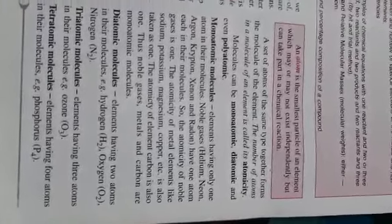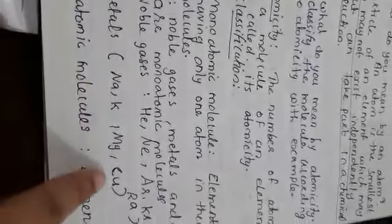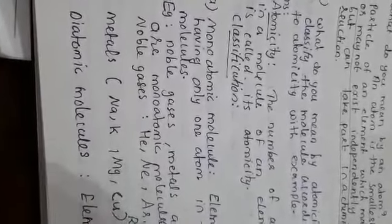Monoatomic molecules are elements having only one atom in their molecule. Examples are noble gases like helium, neon, argon, krypton, etc. Metals like sodium, potassium, magnesium and copper, and also carbon, are called monoatomic molecules.